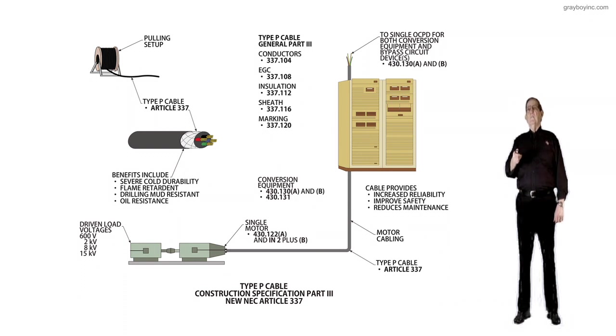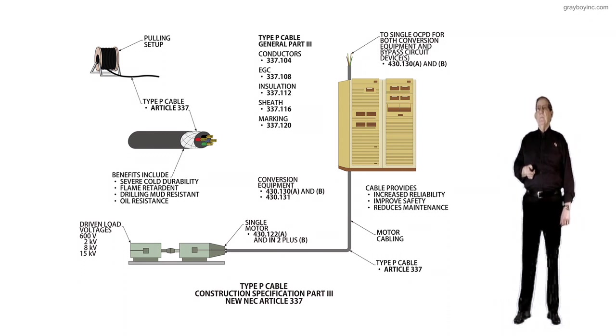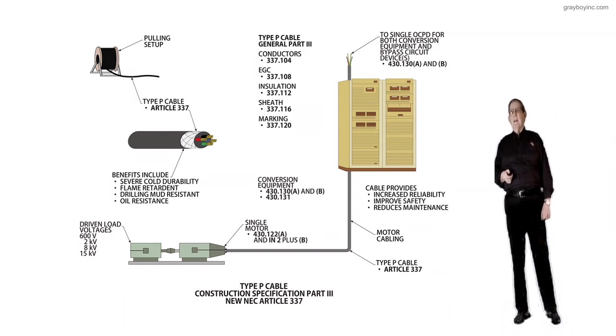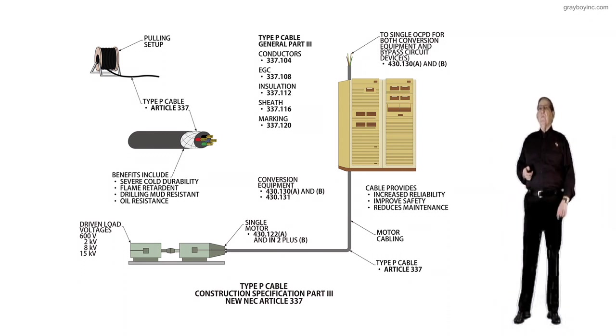Now let's look at the cable coming into the very top of the adjustable speed drive. Notice the single overcurrent device for both conversion equipment and bypass equipment devices, if provided, by 430.130 A is in Apple and B is in Boy.